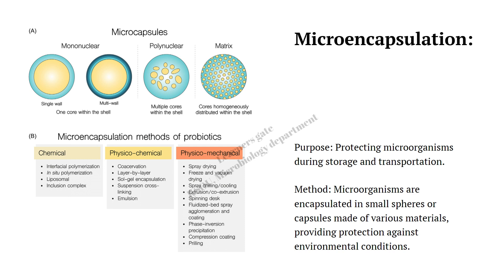Microencapsulation is one of the most popular techniques, especially followed by the research community. It protects the microorganism during storage and during transportation. The microorganisms are encapsulated in small spheres or in a capsule form made of various materials, providing protection against environmental stress or environmental conditions. It can be a monolayer — single layer — or a multi-wall layer, or a poly-nuclear layer with different microbes present in it, or a matrix form where different cells are inside a micro-capsule.